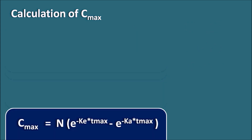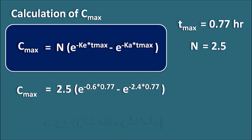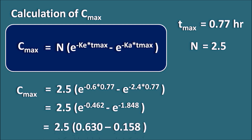Calculating C-max by substituting T-max equals 0.77 hours and N equals 2.5: C-max equals 2.5 times (e to the power of minus 0.6 times 0.77 minus e to the power of minus 2.4 times 0.77), which equals 2.5 times (e to the power of minus 0.462 minus e to the power of minus 1.848), equals 2.5 times (0.630 minus 0.158), giving C-max equals 1.18 micrograms per ml. The peak plasma concentration of 1.18 mcg/ml is achieved after 0.77 hours.